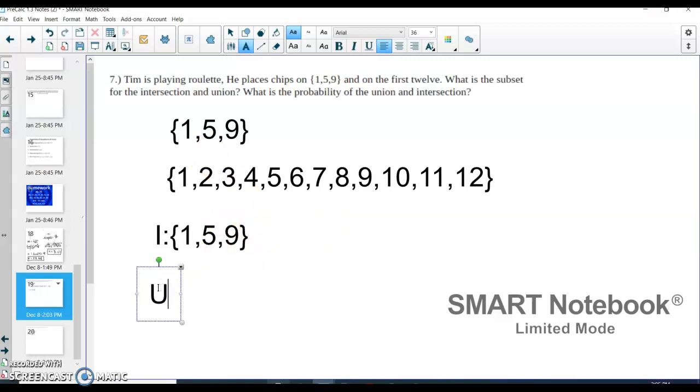Now, the union's a little bit different. The union is the combination of both sets without having the numbers in our intersection be repeated. So I'm going to list all the numbers in both sets, and I'm not going to repeat the ones that are in both. So I have 1, 2, 3, 4, 5, and I'm just listing 5 once.